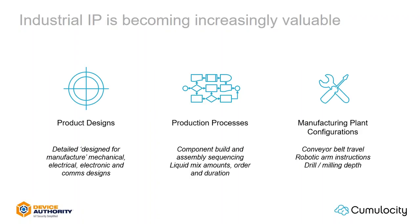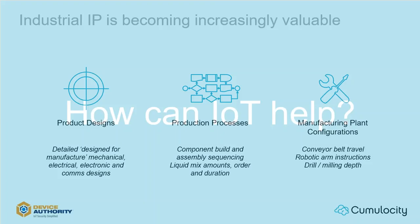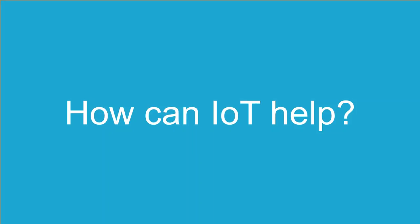Historically plant and infrastructure has been associated as greatest value, but the intellectual property itself is now embedded within many areas of the organization's business, most easily seen as sophisticated products and manufacturing equipment designs, production processes and configurations of the manufacturing plant and infrastructure. So how can IoT help, and in particular how can it help us securely deploy and manage industrial intellectual property?